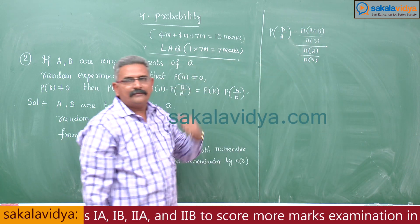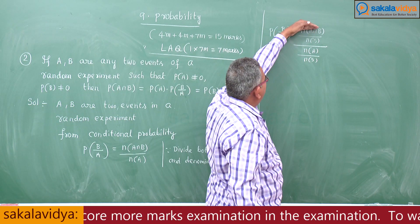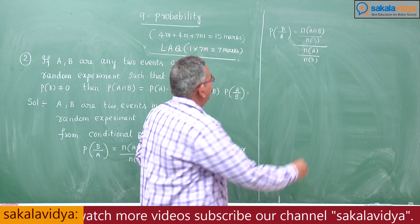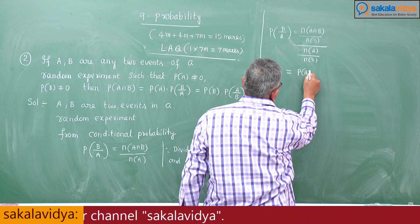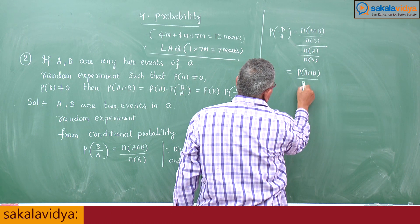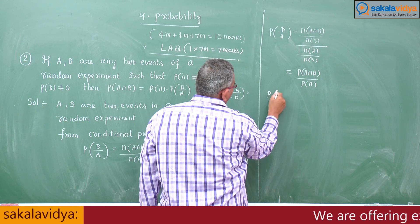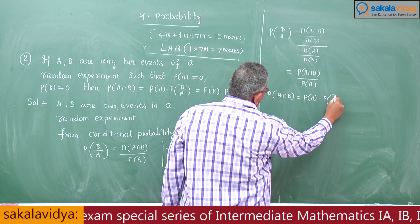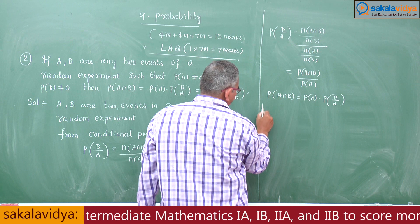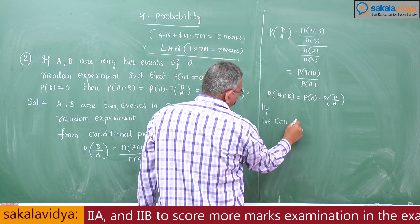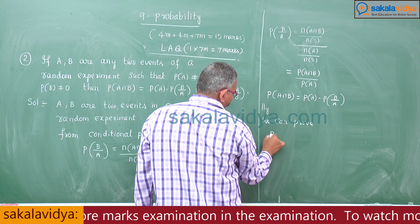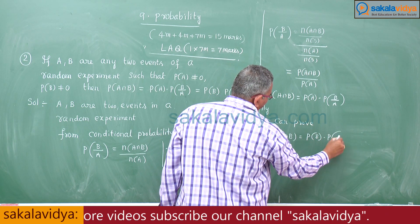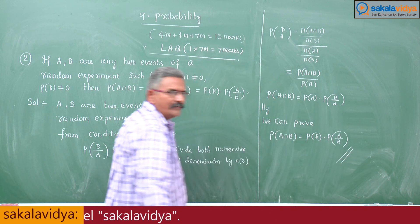Observe numerator and denominator: favorable cases by total number of cases — that is the classical definition of probability. This becomes P of A intersection B divided by the probability of A. By cross multiplication, P of A intersection B is equal to P of A into P of B conditioned on A. Similarly, we can prove P of A intersection B equals P of B into P of A conditioned on B. Hence it is proved.